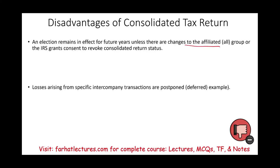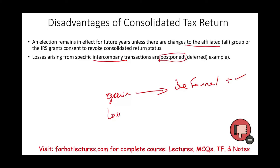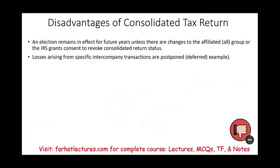Another disadvantage is that losses arising from specific intercompany transactions are postponed. Remember, we were happy that gains are deferred — that was an advantage. But for losses, we don't want them deferred because for tax purposes we like losses; we like deductions. When two companies combine and have intercompany losses, they cannot immediately take those losses — they must defer them.